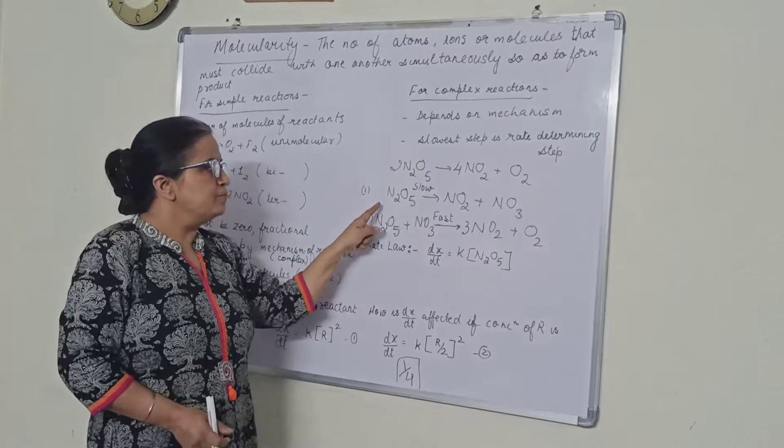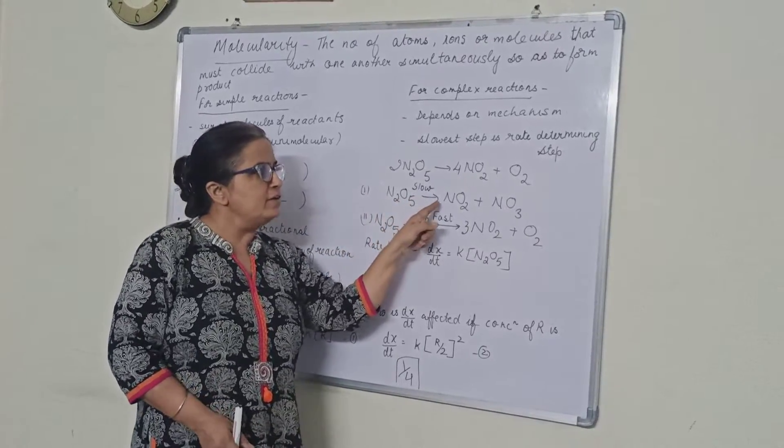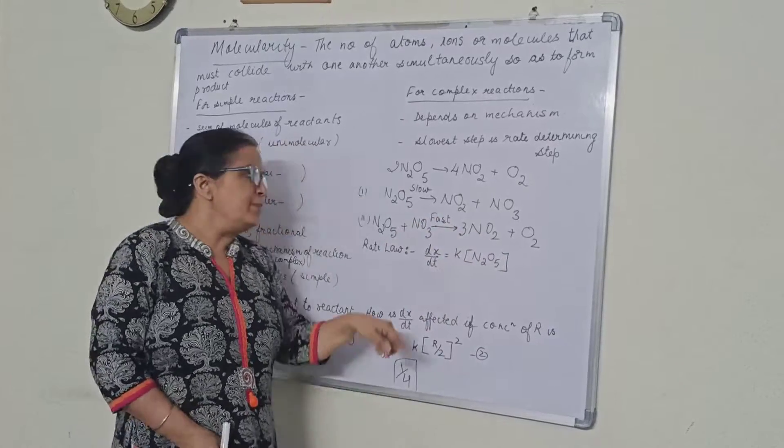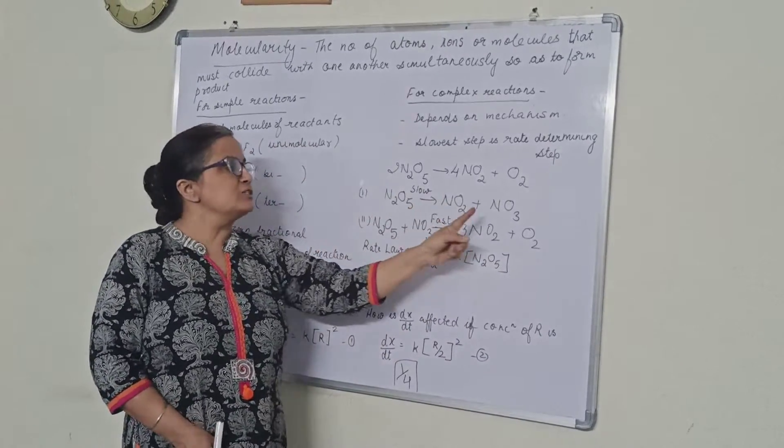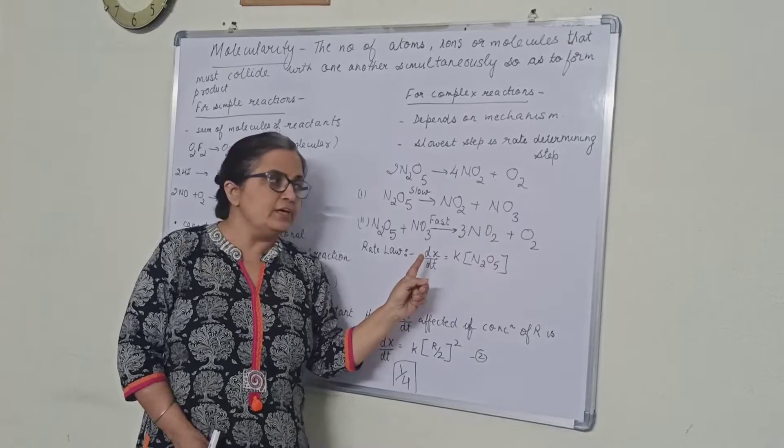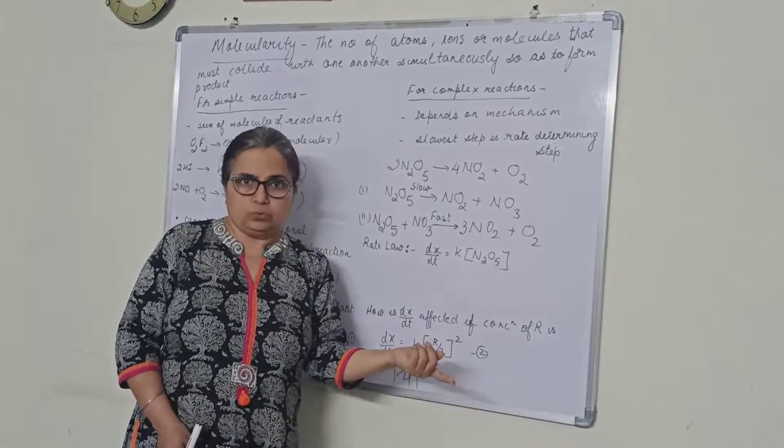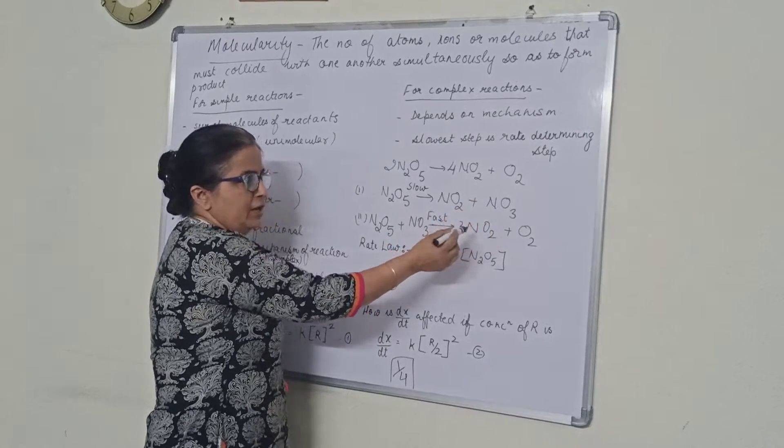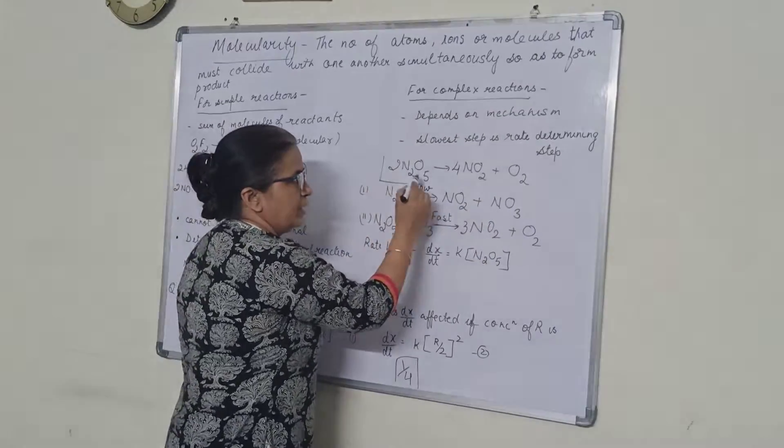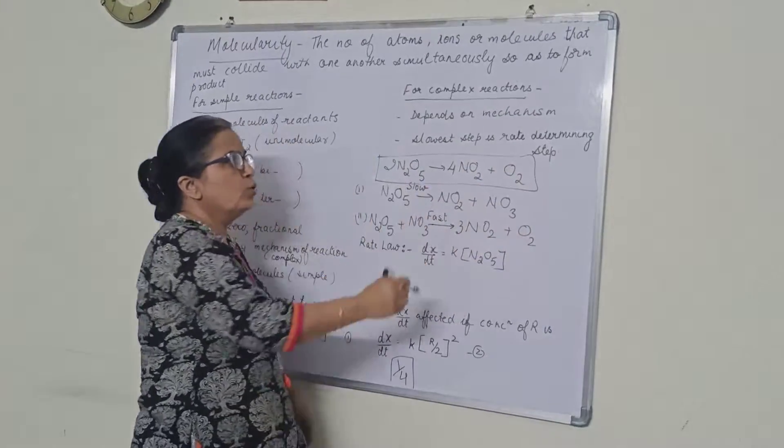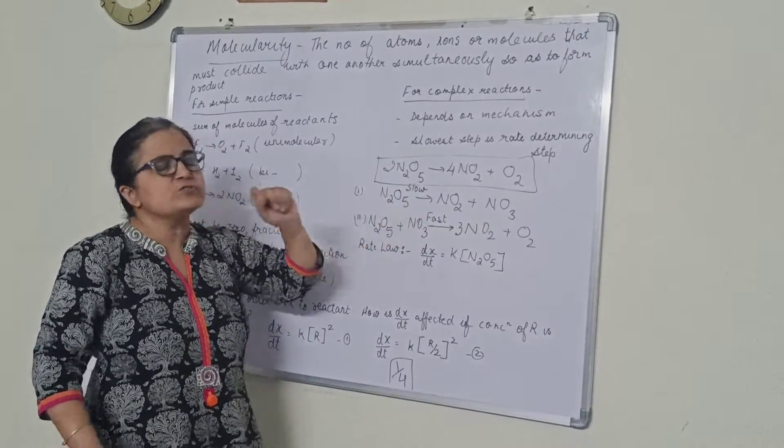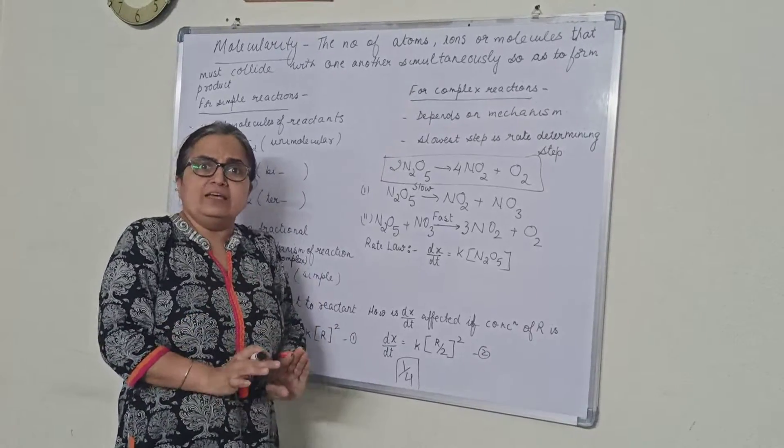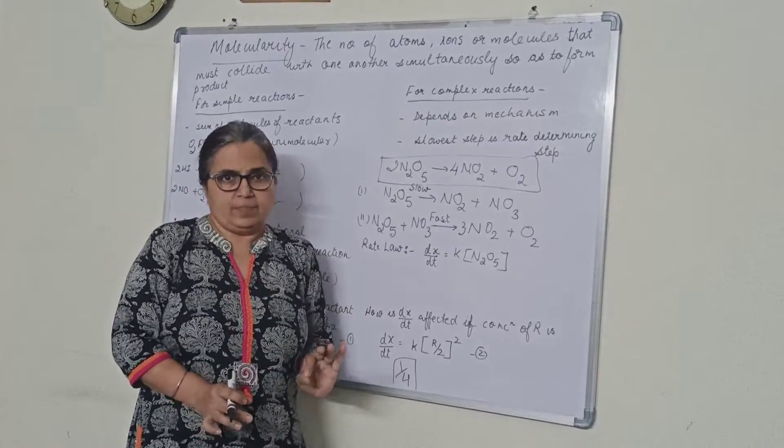I am taking example of N2O5 decomposition. The equation is this. It appears as if molecularity is 2, but the molecularity is 1. This is the mechanism. The first step, N2O5 forms NO2 plus NO3. In the second step, N2O5 again reacts with one of the intermediate NO3 and it forms NO2 plus O2. If I combine the 2 reactions, I will be cancelling NO3. Out of the 2 reactions, the first is slow and the second is fast. Whichever is the slowest step, that is the rate determining step.